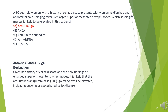The answer is A. Anti-tTG IgA. Given her history of celiac disease and the new findings of enlarged superior mesenteric lymph nodes, it is likely that the anti-tissue transglutaminase IgA marker will be elevated, indicating ongoing or exacerbated celiac disease.